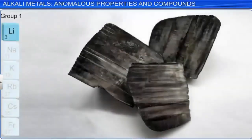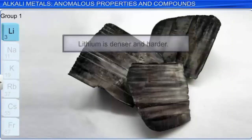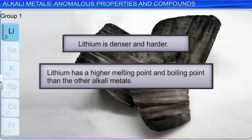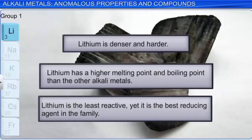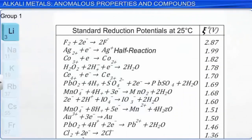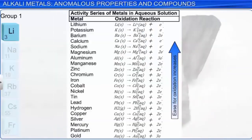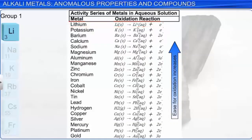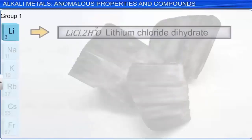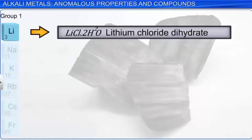In what respects is lithium atypical? Lithium is denser and harder than the other members of its family, and its melting and boiling points are higher than those of the other alkali metals. Lithium is the least reactive element in the family, yet it is the best reducing agent. Looking at the table of standard reduction potentials, lithium is at the bottom, meaning it has the strongest tendency to oxidize among the group 1 metals, placing it at the top of the activity series for single replacement reactions. Additionally, lithium chloride is the only alkali metal chloride that forms a hydrate—lithium chloride dihydrate—while the chloride salts of the other alkali metals are anhydrous.